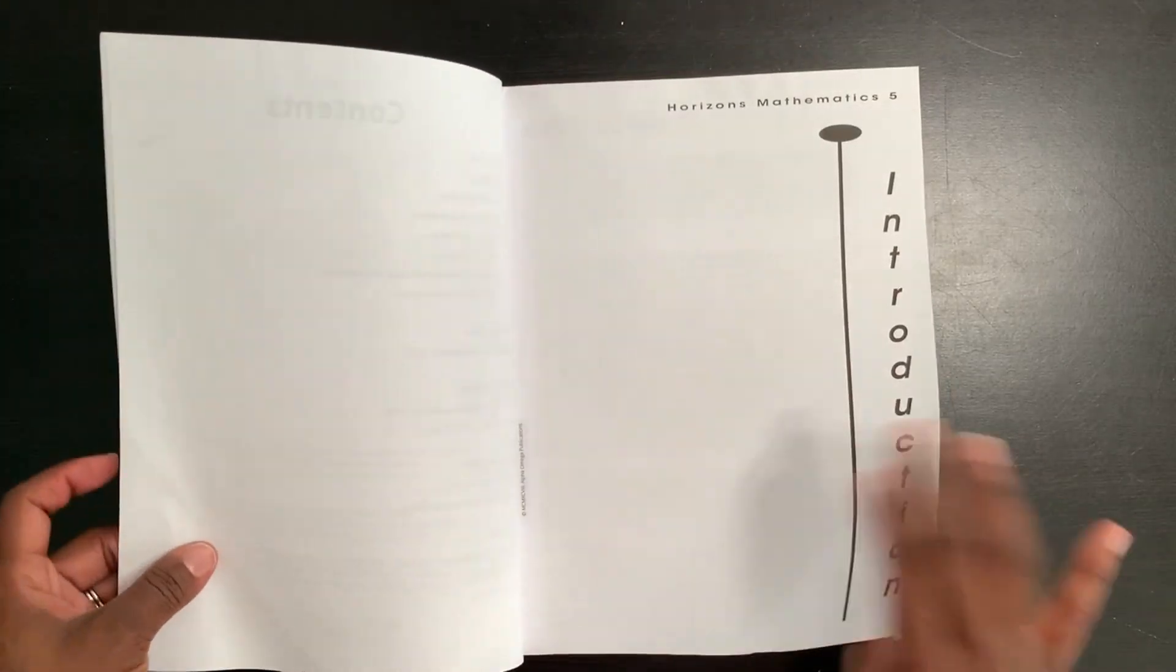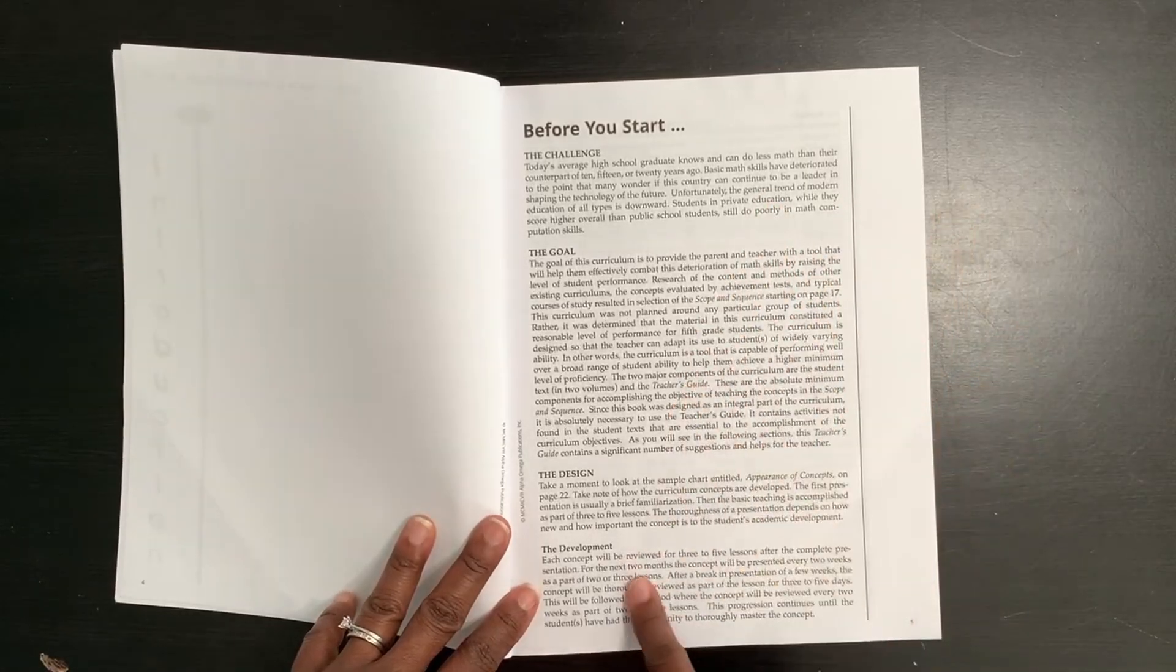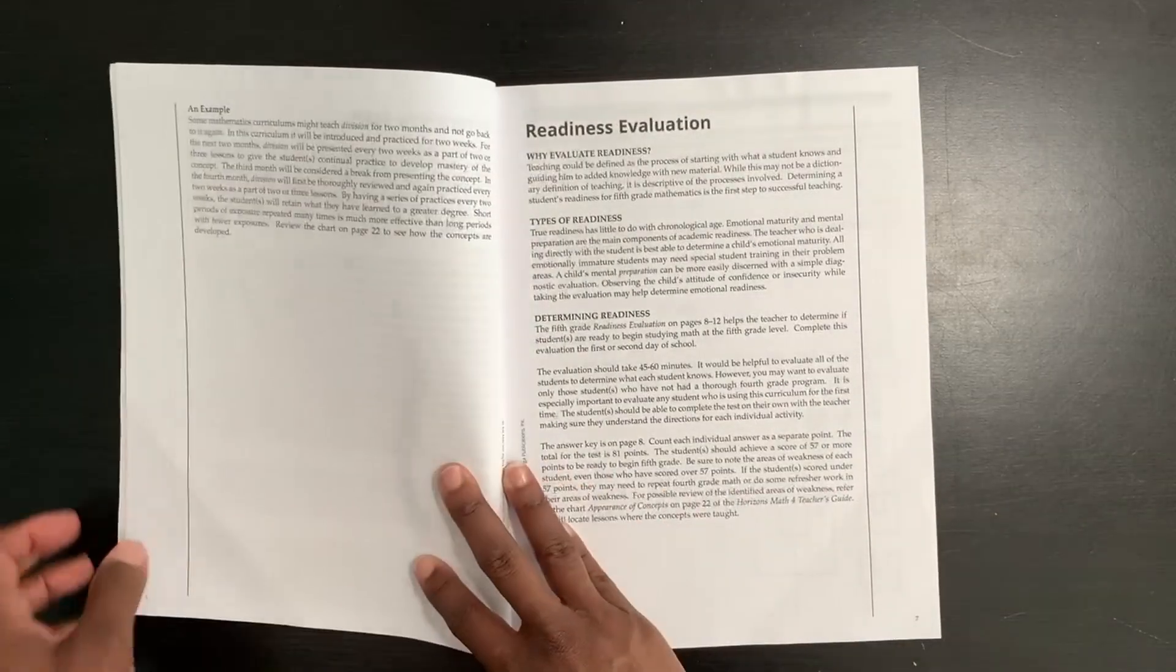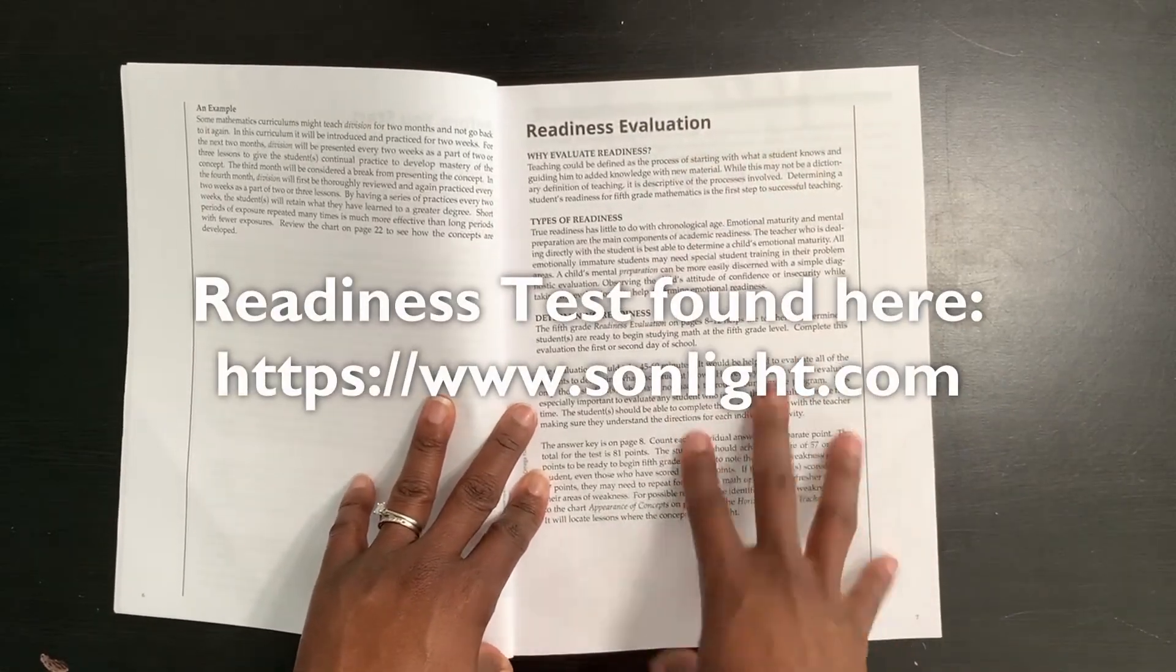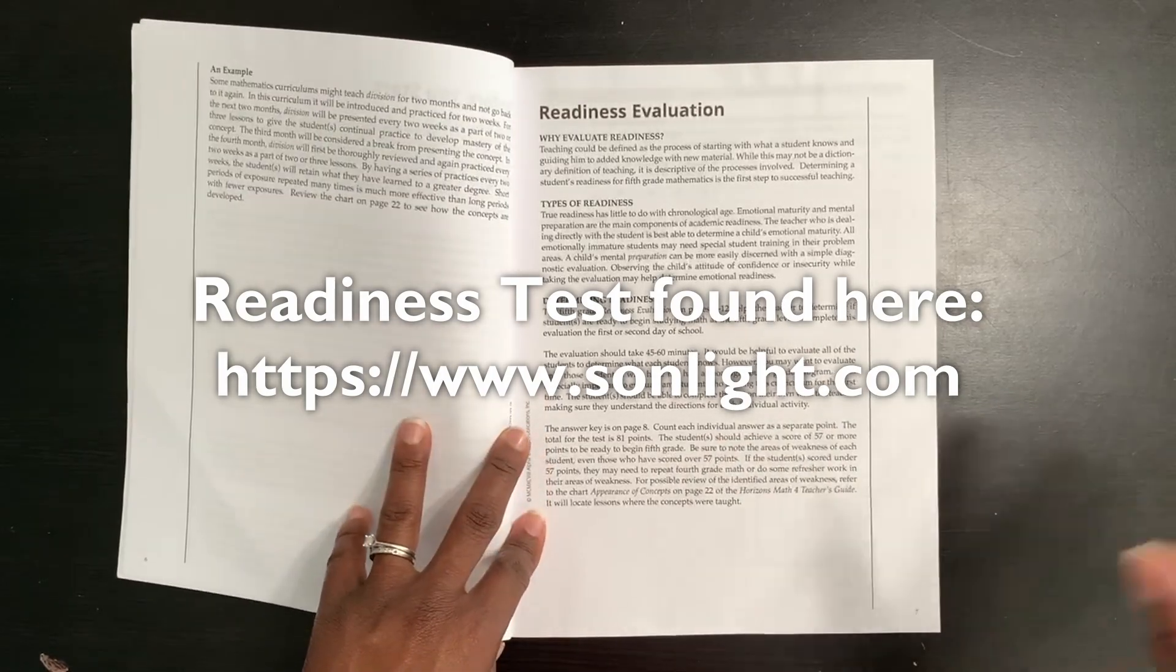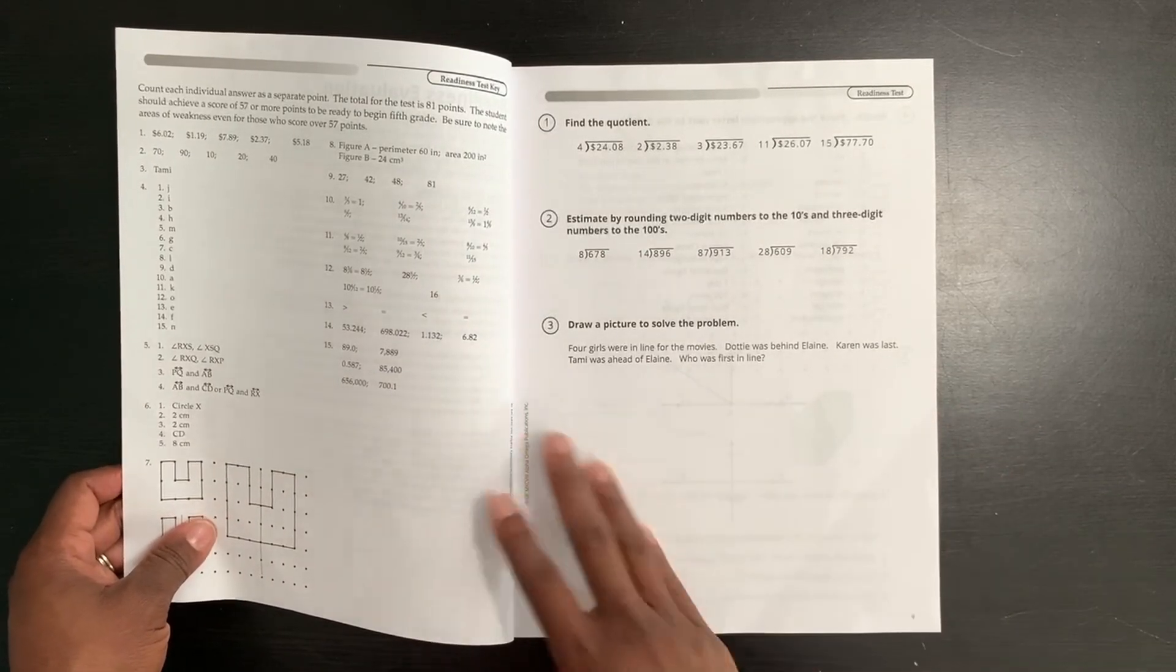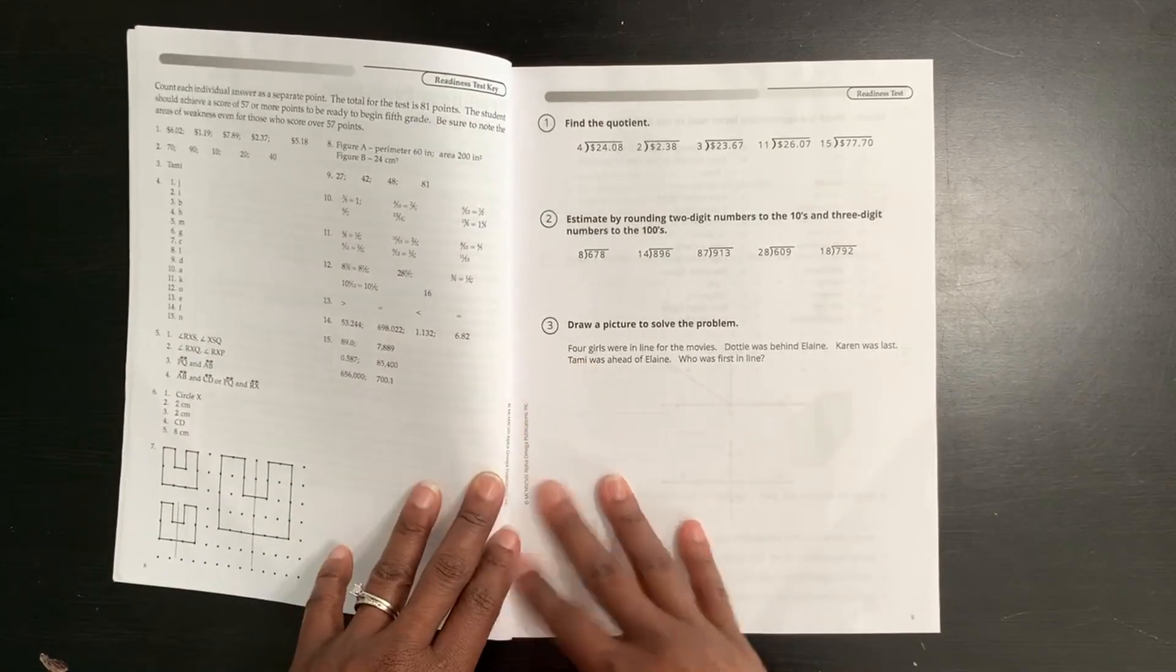If you keep flipping, it goes into the introduction. Before you start, challenge the goals, the design of this curriculum and the development and what that looks like for going through it and using it. Then it will also give you examples. There is also a readiness evaluation. This readiness evaluation can be found online if you're looking for it to determine if this is appropriate for your child for this level. You don't have to buy the curriculum in order to determine if your child is ready for it. You would just simply get the readiness exam online, give it to your child and you can move on from there.